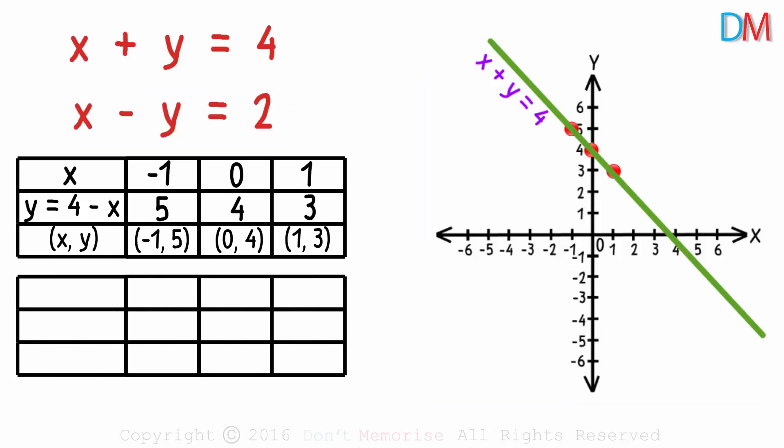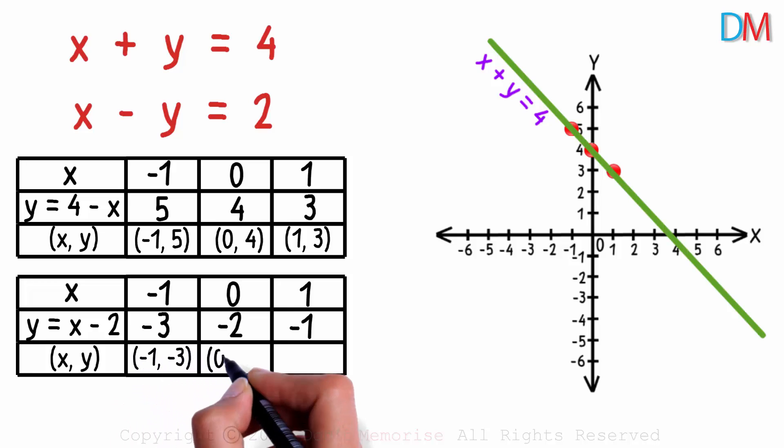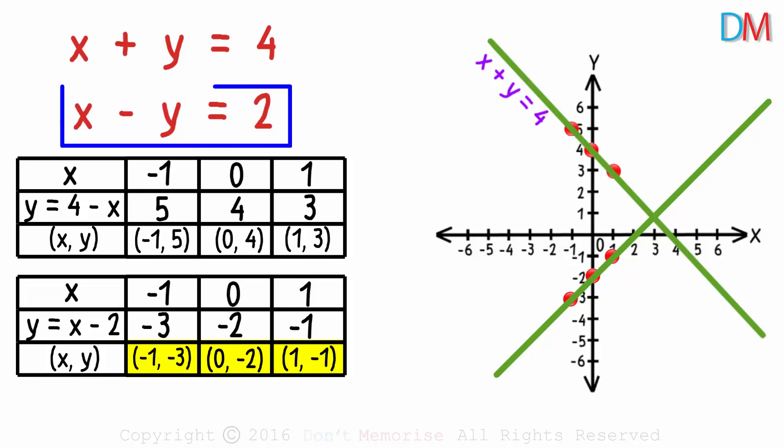We make a similar table on the left for the second equation and get three pairs of values for x and y. We assume three random values for x and get appropriate values for y. The three pairs of values we get are... Plotting these points and joining them, we get another straight line for the second equation.